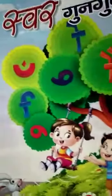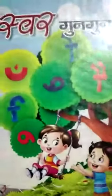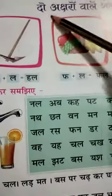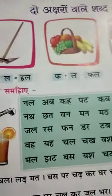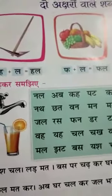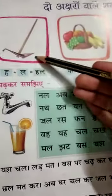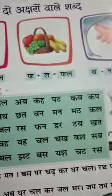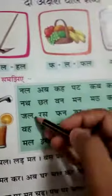Let's open your book of Swargungun. I have told you about classwork, and I'm going to show you homework. So let's do it in Hindi. I have told you about two words of aksharu, which I have told you about reading and which I have written.